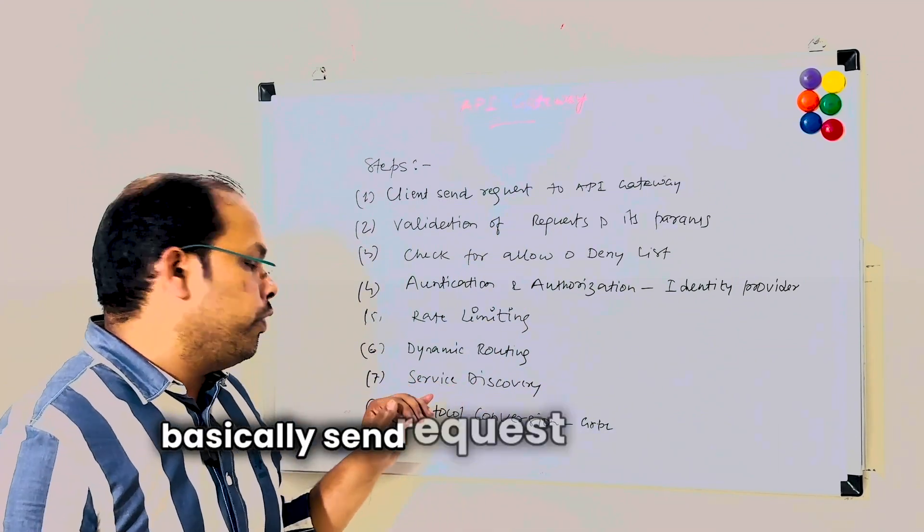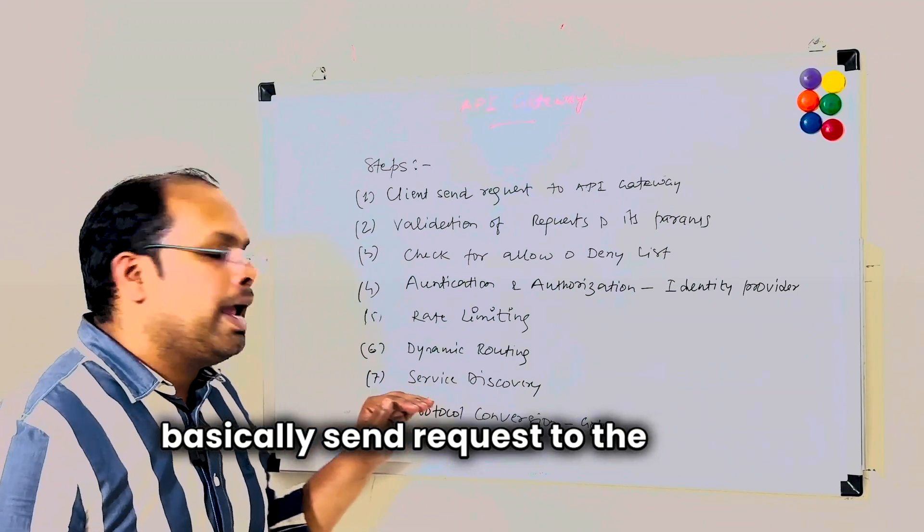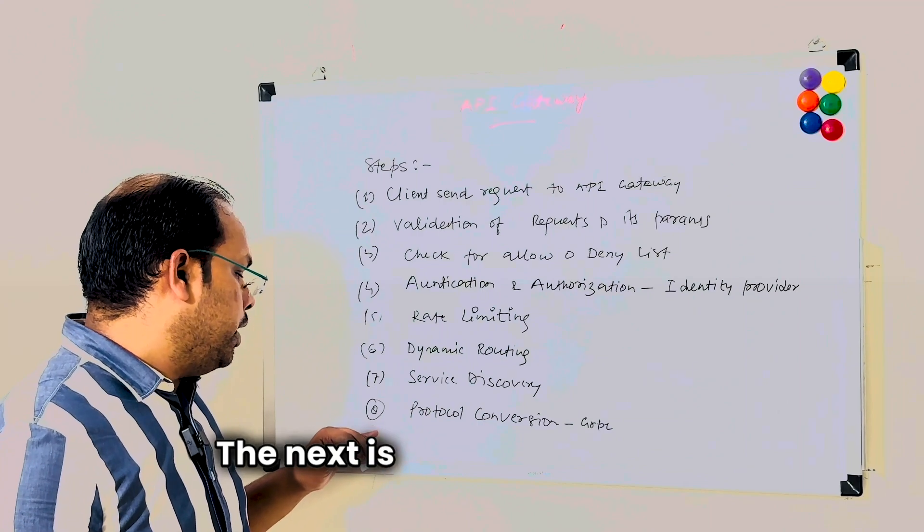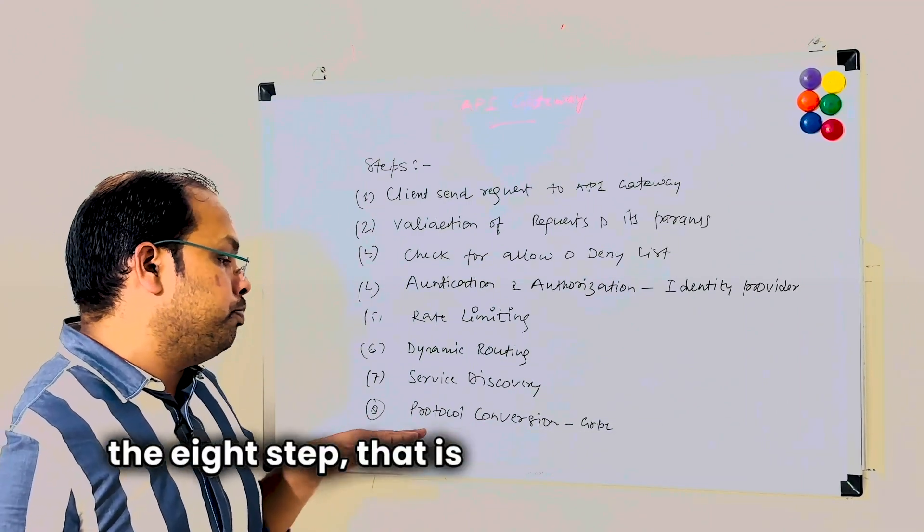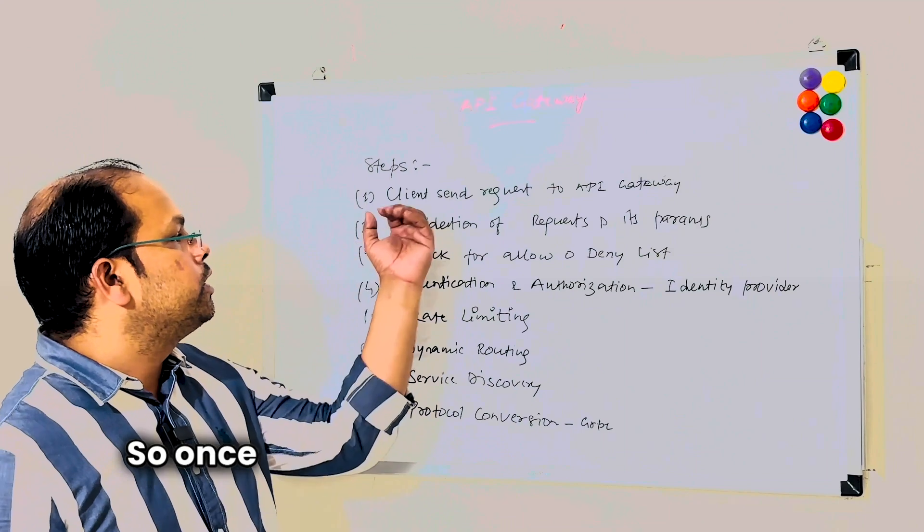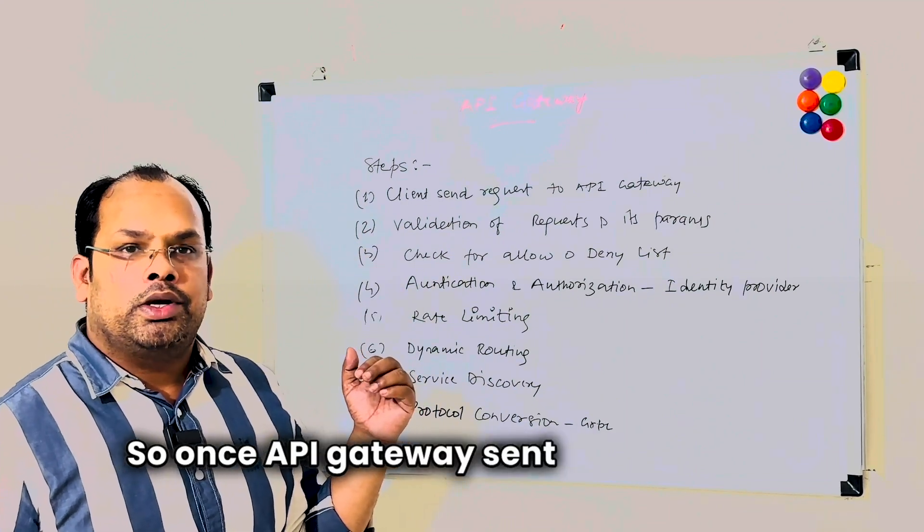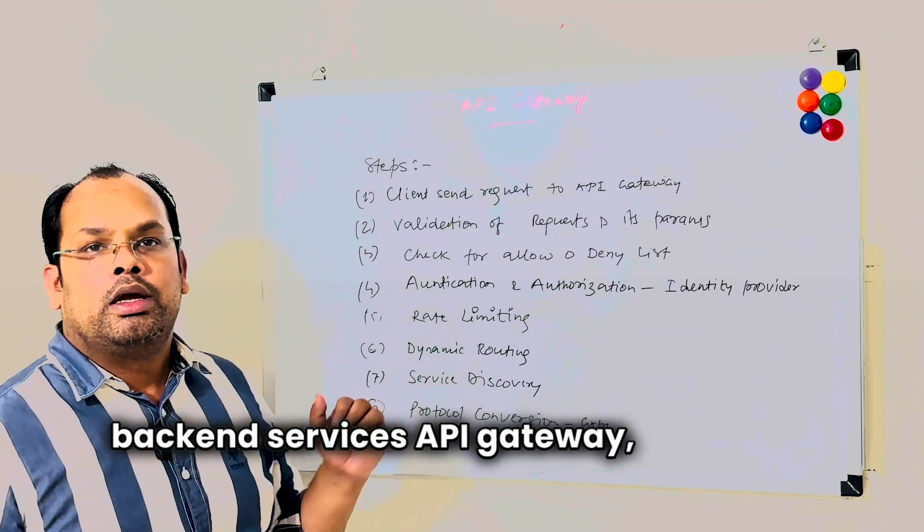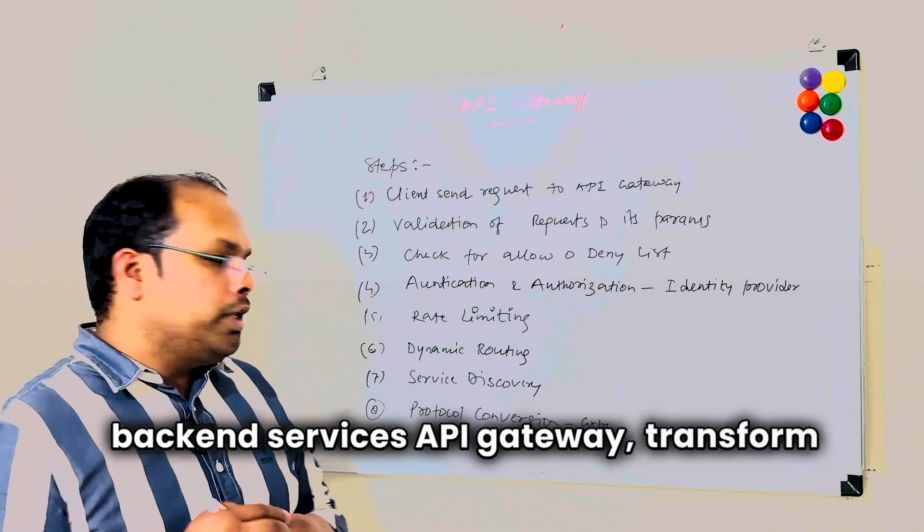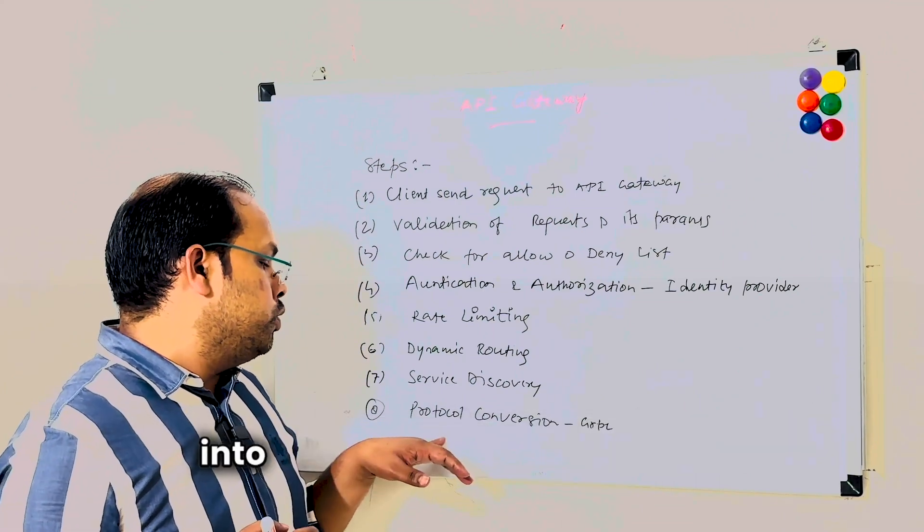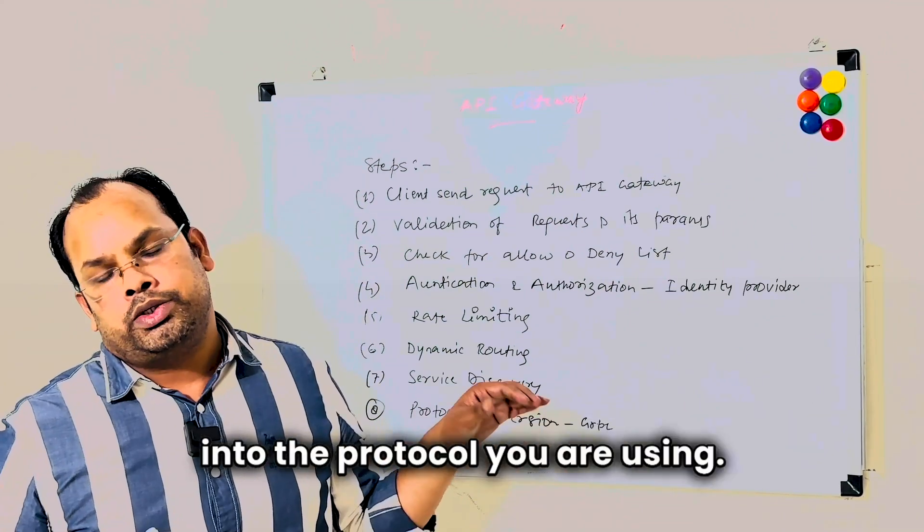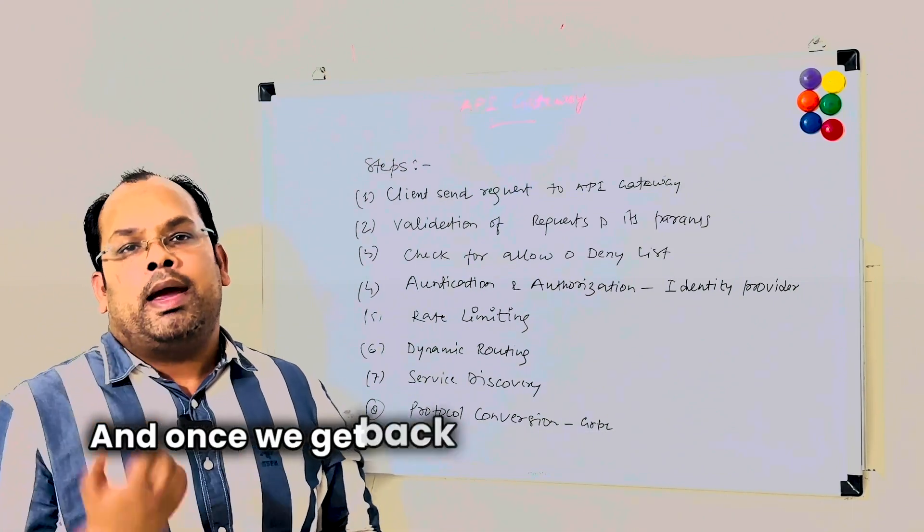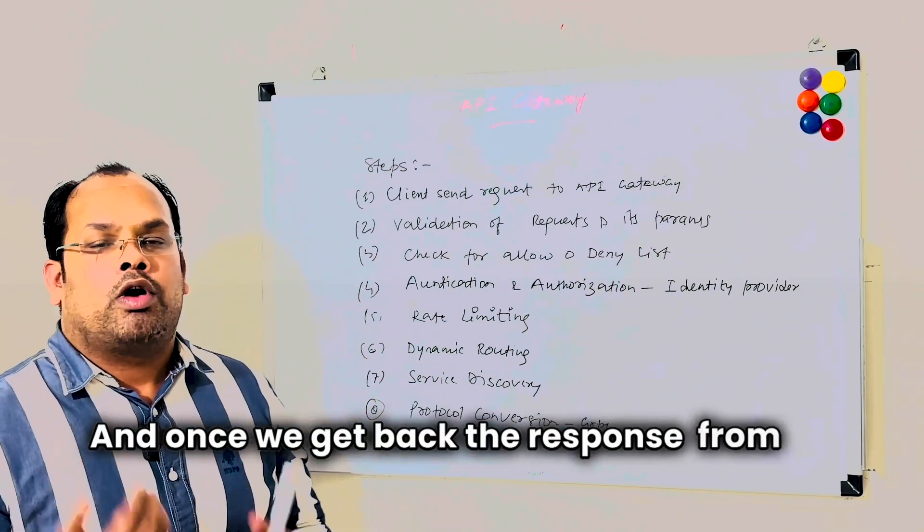The next is step eight - that is protocol conversion. Once API Gateway sends requests to the backend services, API Gateway transforms that particular request into a protocol you are using. We can say gRPC.